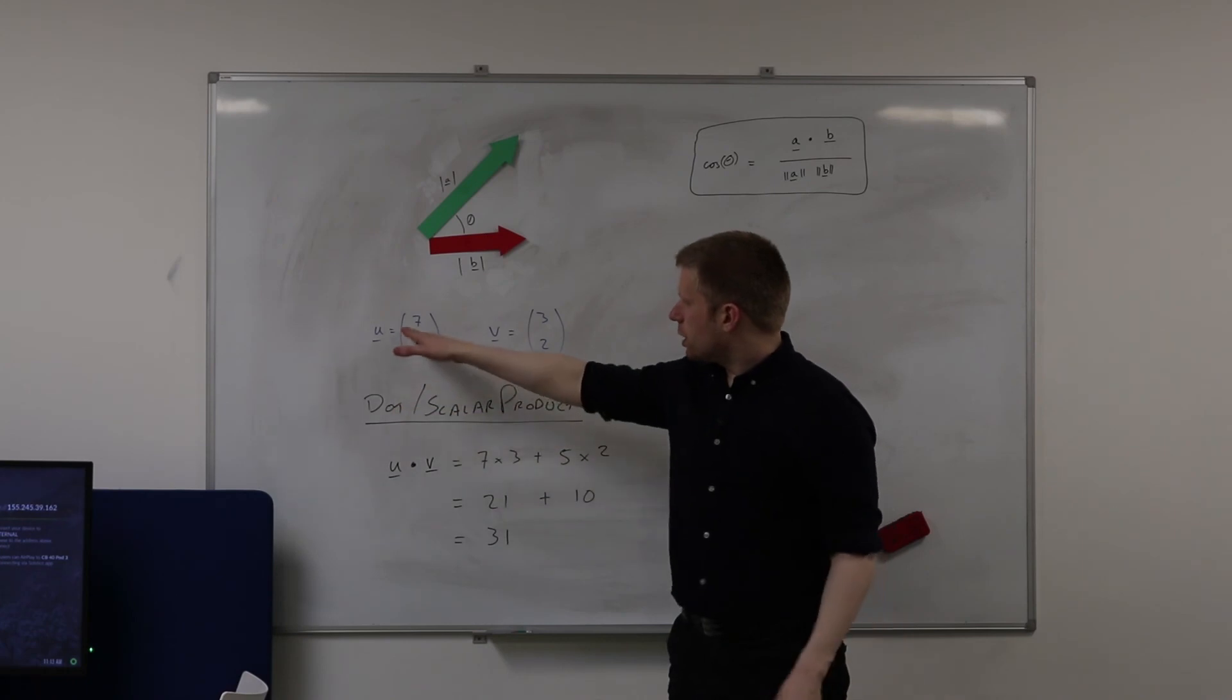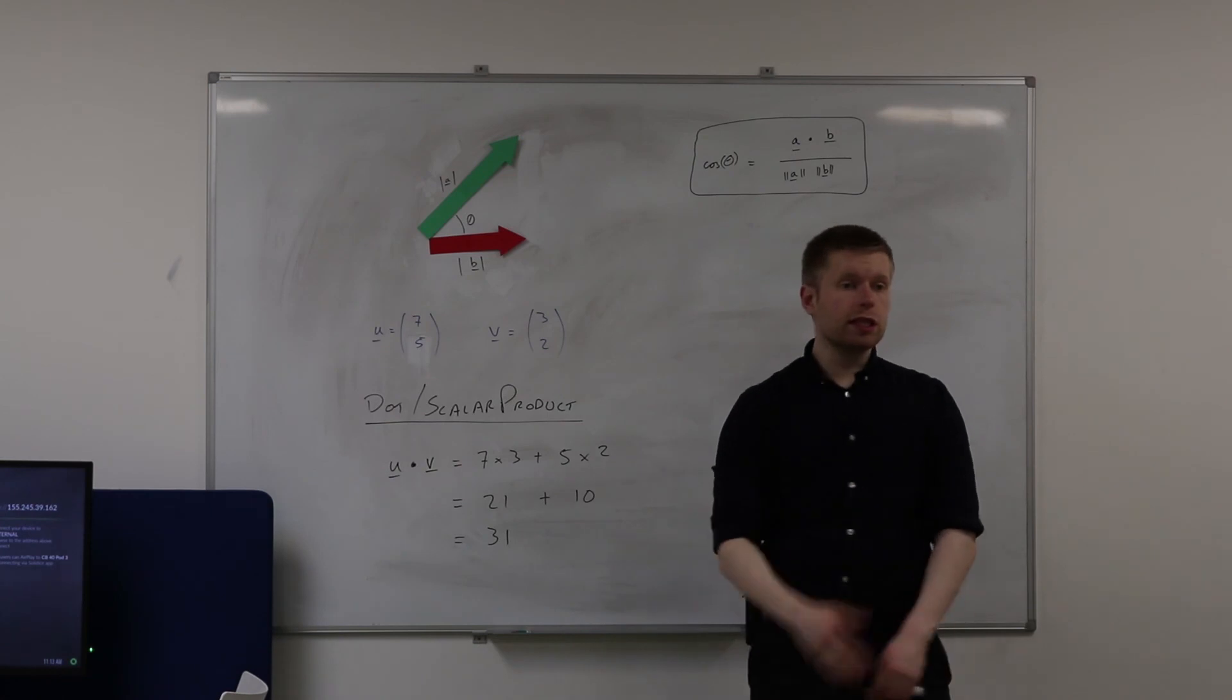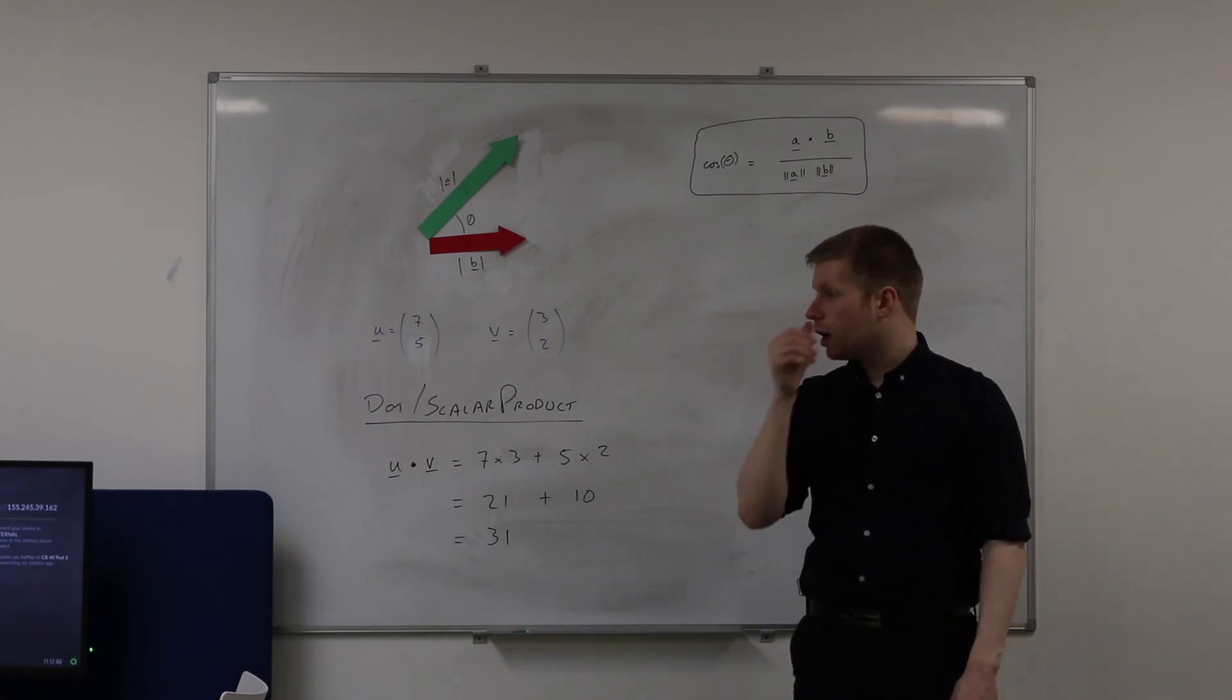So you're happy u dot v is just that multiplied by that plus that multiplied by that. And the answer results in a scalar. The answer results in just a single number. It's just a value.